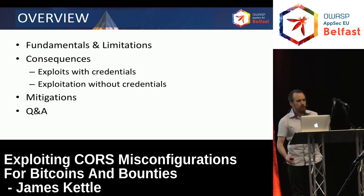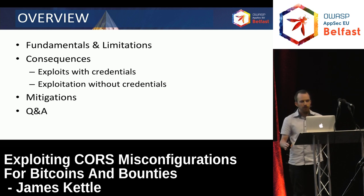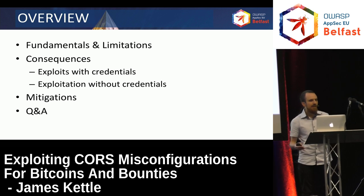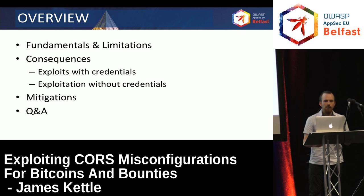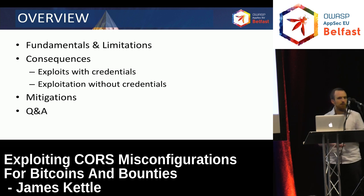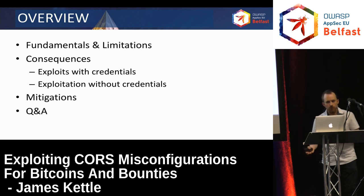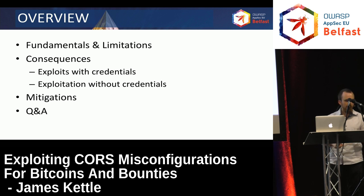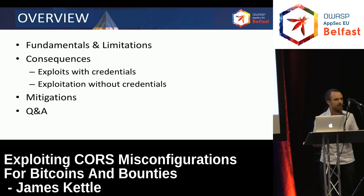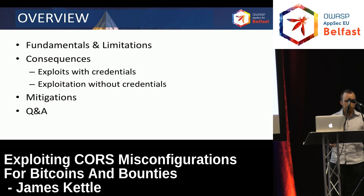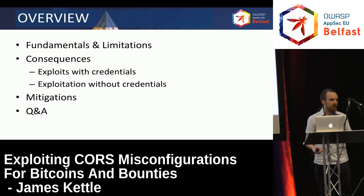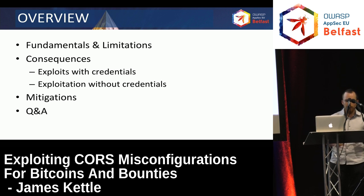First, I'll talk very briefly about the fundamentals of CORS from a hacker's point of view, and I'll focus on various limitations in the CORS design and implementation and the workarounds that real websites end up doing to handle these limitations. Then I'll look at what goes wrong with these workarounds and how we can use it to steal Bitcoins and hack various other sites. Then I'll look at some more esoteric issues and ways to exploit CORS that are a bit less obvious, and then I'll talk about various mitigations that browser vendors, specification authors, and developers can take, and take five minutes of questions.